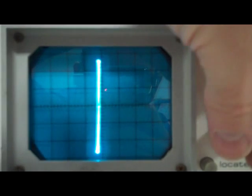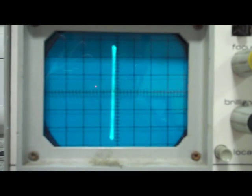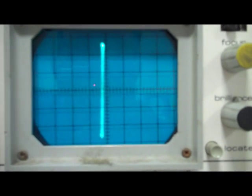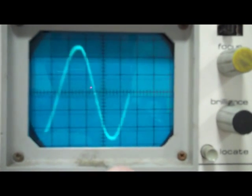So let's turn the time base off and measure the peak voltage, which is 2.8 centimeters. So if the peak is 2.8 centimeters and the CRO is set at 2 volts per centimeter, then we have a peak voltage of 5.6 volts.